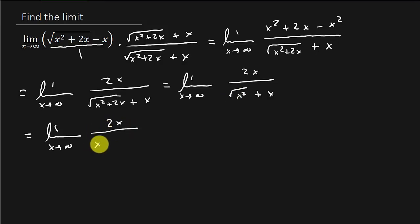And the square root of x squared is x plus x. And so that's the limit as x goes to infinity of 2x over 2x, which is the limit as x goes to infinity of 1, which is equal to 1. So that limit is 1.